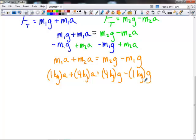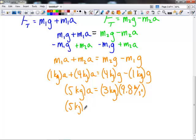I'm going to also go ahead and substitute in here. 1 kilogram plus 4 kilograms, which is 5 kilograms, times the acceleration, equals 3 kilograms times 9.8 meters per second squared. 3 times 9.8 is 29.4. So 5 kilograms times A equals 29.4 newtons. And if I divide both sides by 5, the acceleration of my system will be 5.88 meters per second squared.